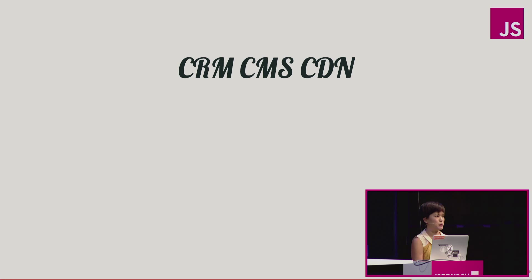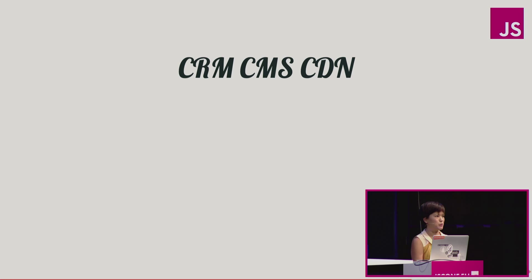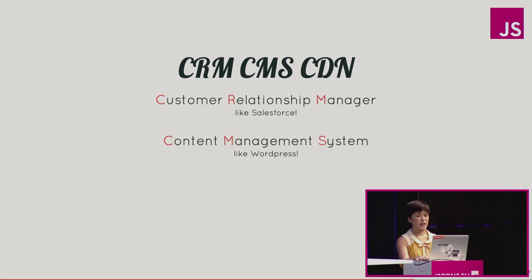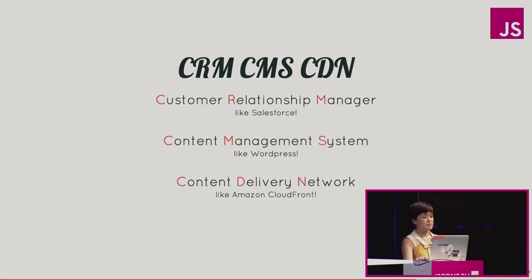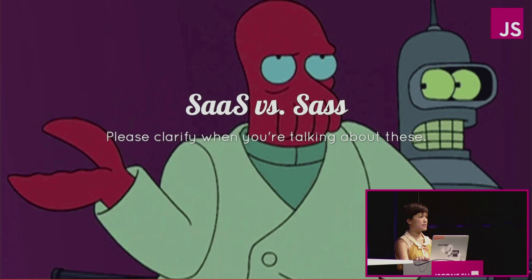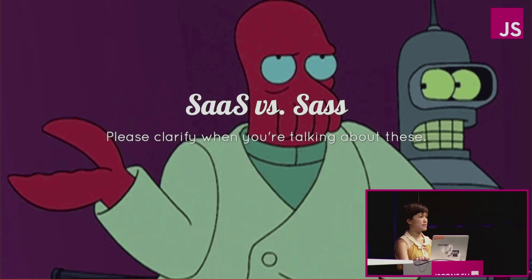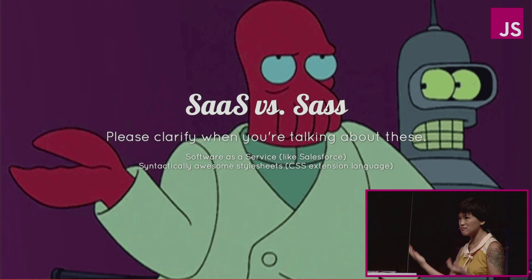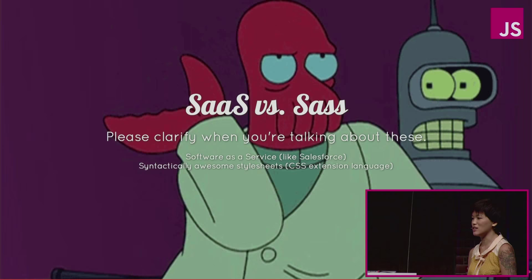Moving on to acronyms. Here are some acronyms I always get confused: CRM, CMS, and CDN. CRM is a Customer Relationship Manager, kind of like Salesforce. A CMS is a Content Management System, kind of like WordPress. And a CDN is a Content Delivery Network, kind of like Amazon CloudFront. Next is SaaS versus SaaS — please clarify to me which one you are talking about. Are you talking about Software as a Service, like Salesforce? Or are you talking about Syntactically Awesome Style Sheets, which is the CSS extension language? If you don't tell me, then I'm going to get sassy about it.